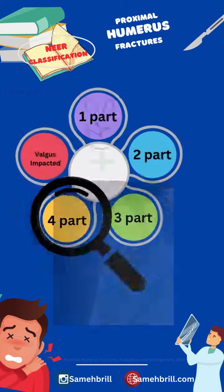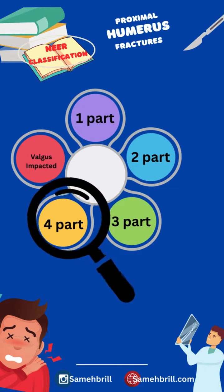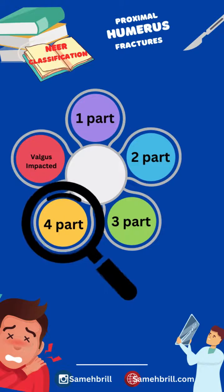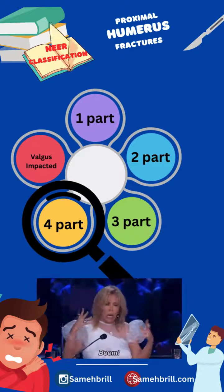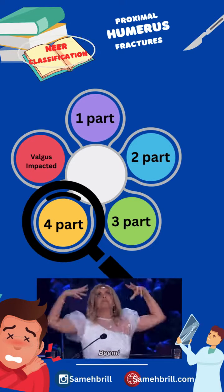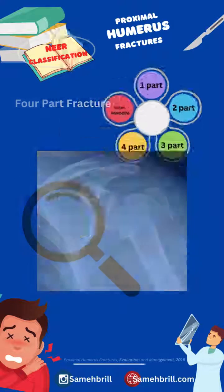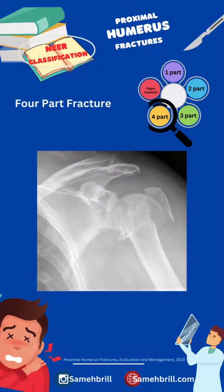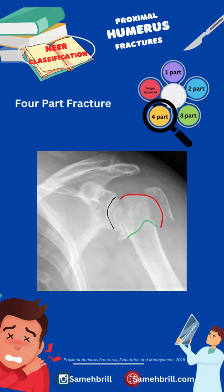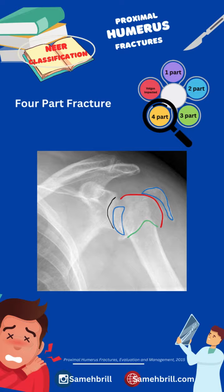Moving on to four-part fractures, there is complete separation of the articular surface from the other fragments. In the classic four-part fracture pattern, the head is dislocated out of the glenoid and has no soft-tissue attachments to the tuberosities.